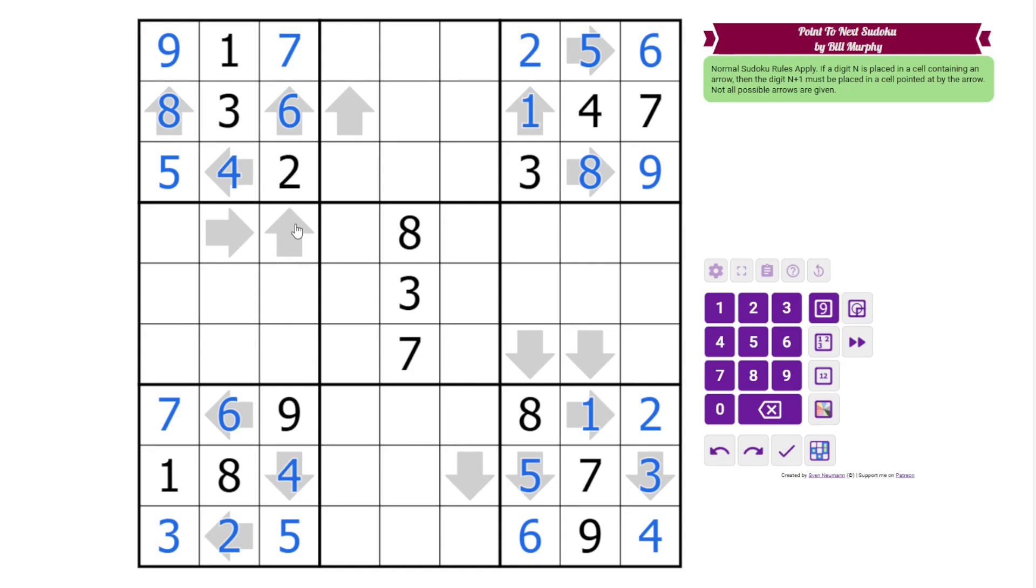And now let's look at some of these arrows in between. So these are 1, 3, and 8. However, this can't be 3 or 8 because the digit following those, 4 and 9, is not up here. This must be 1 pointing at the 2, and then this is 8, 3 because of this 3.